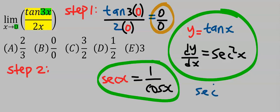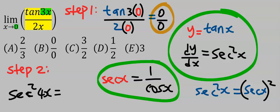Likewise, sec x is equal to one over cos x. Subsequently, sec²x is the same thing as (sec x)². Also, sec²4x is the same thing as (sec 4x)².